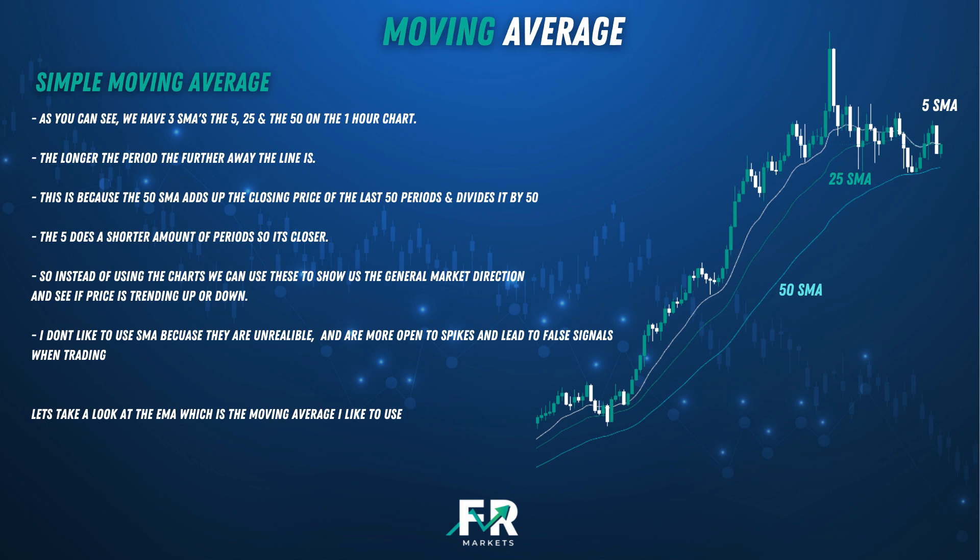Here we have three SMAs — the 5, 25, and 50 — on the one hour chart. The longer the period, the further away the line is. This is because the 50 SMA adds up the closing prices of the last 50 periods and divides by 50, while the 5 period SMA covers a shorter range so it stays closer to price.